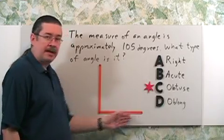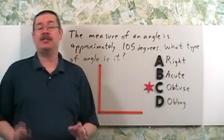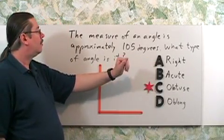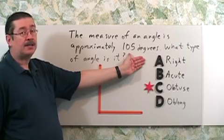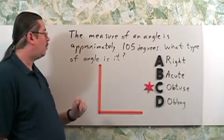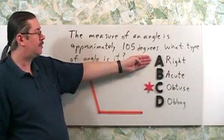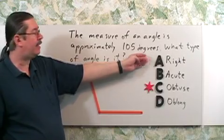Let's start off with a 90 degree angle. Well, by definition, a 90 degree angle is a right angle. But we don't have a 90 degree angle, it's 105. So that actually means it's slightly bigger than 90 degrees. So it cannot be choice A, not a right angle.